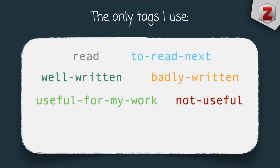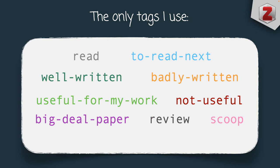I have three tags that tell me more about the type of publication. 'Big deal paper' can be assigned to publications widely recognized by the community as very important for moving a field forward — typically those with many citations. The tag 'review' tells me that an item is a review paper as opposed to an original contribution. And the tag 'scoop' flags papers that scooped my research work. While this is a bit of a downer, it's a useful tag because I need to remind myself about publications that did something I was also working on, and I may want to cite them to show awareness.